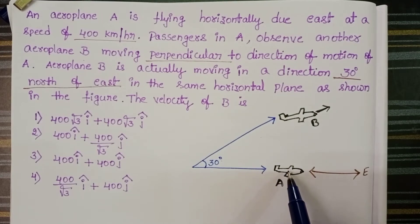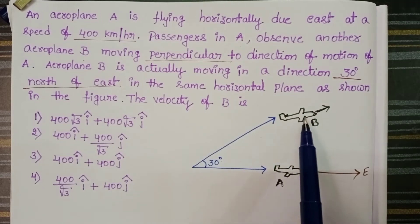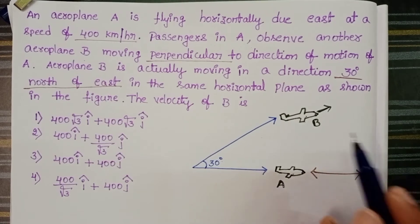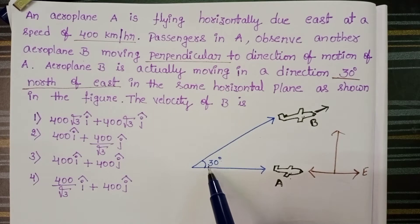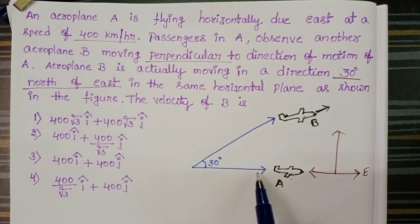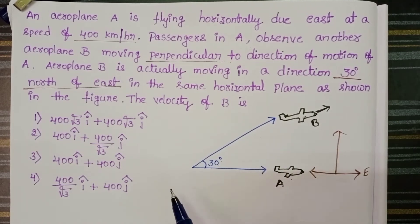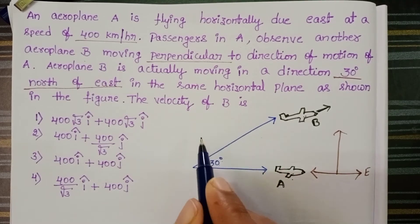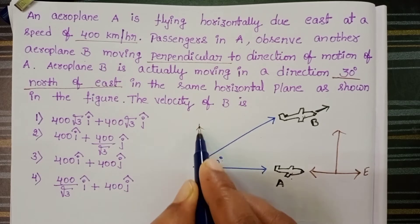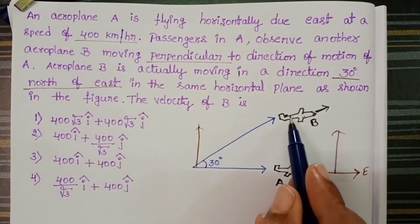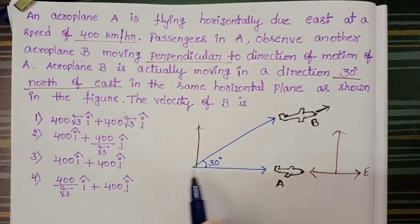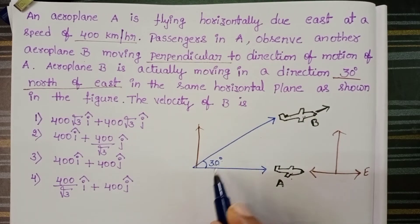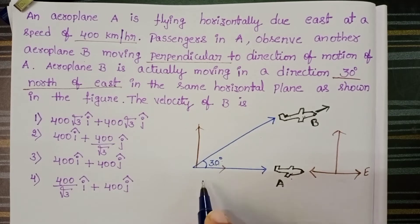Aeroplane A is moving along the horizontal direction, but passengers in A observe aeroplane B moving perpendicular to the direction of A. Actually, aeroplane B makes an angle of 30 degrees to the horizontal in the same plane. Observe the diagram carefully — aeroplane B is moving in the plane of A and makes an angle of 30 degrees to the horizontal direction.